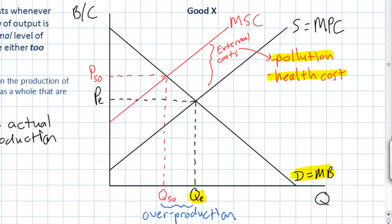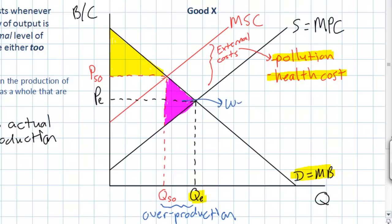What is the result of this overproduction? If society were producing the optimal quantity, there would be a higher price for good x, meaning there would actually be less consumer surplus in the market. However, since good x is a harmful product that creates pollution and higher health care costs in its production, this smaller area of consumer surplus is actually beneficial for society as a whole because it means people are consuming less of this harmful good. In addition, the existence of the negative externality creates a deadweight loss or welfare loss equal to a purple triangle, which shows the external costs borne by society resulting from the overproduction. If quantity supplied decreased to QSO, this welfare loss would no longer exist.